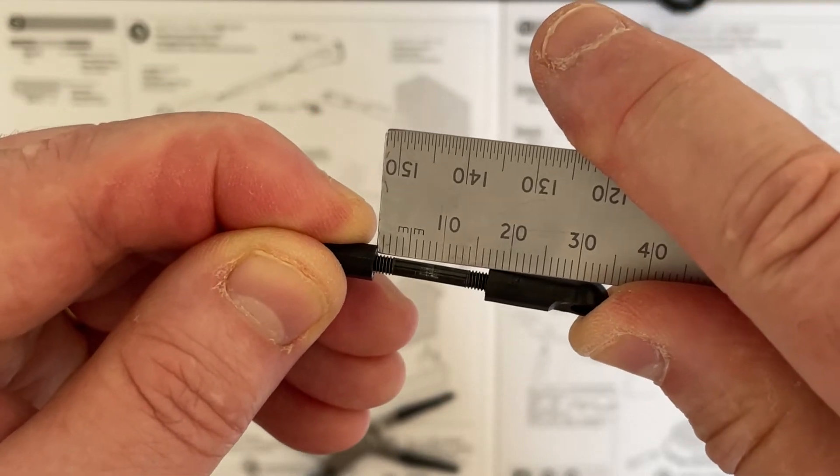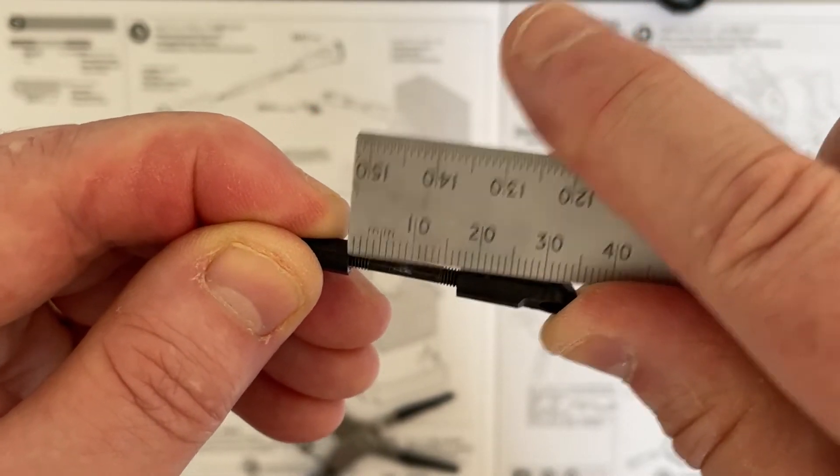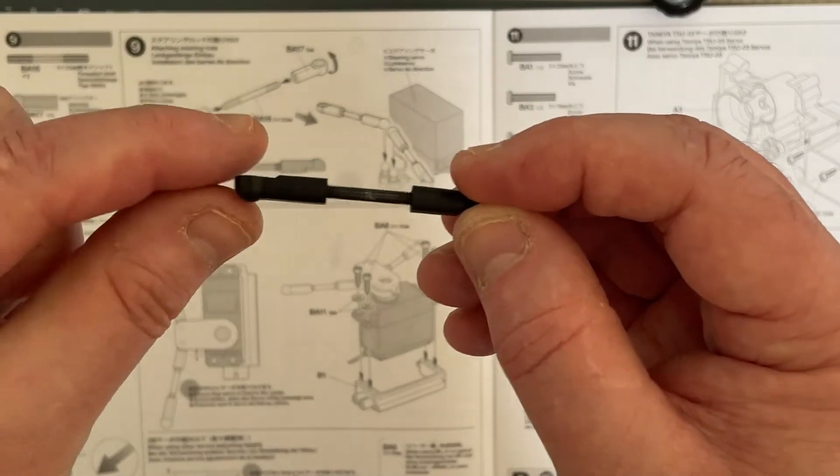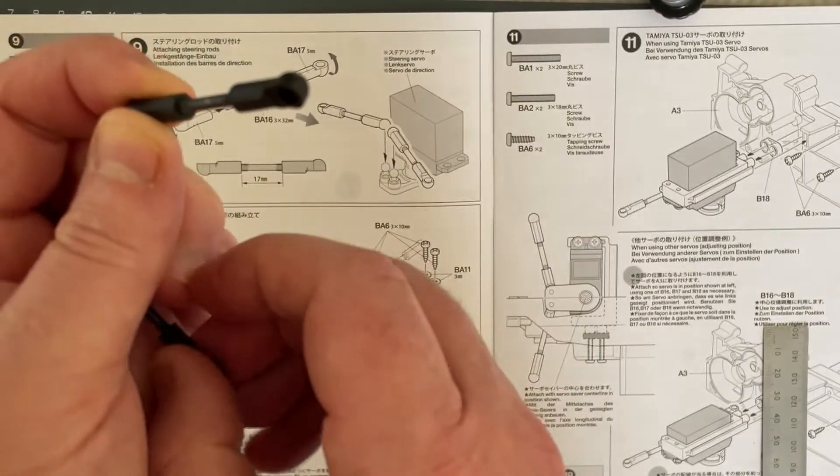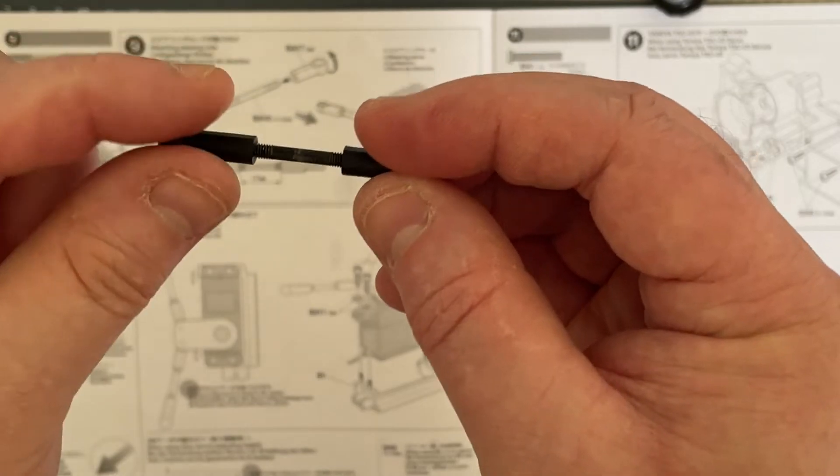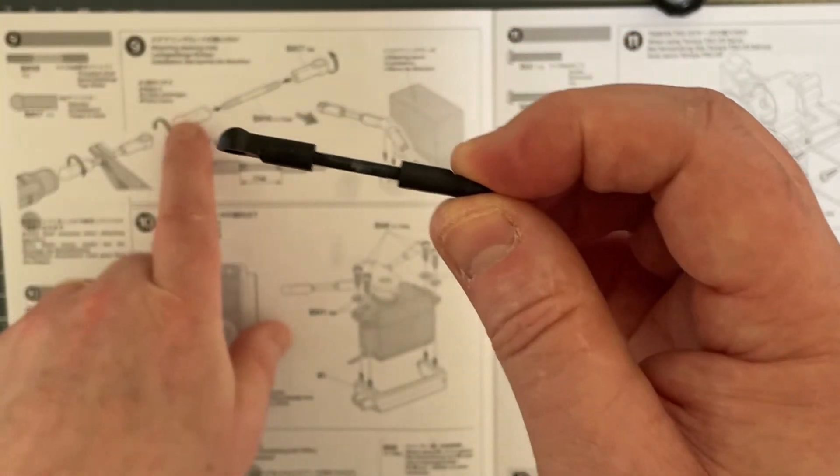So once you've done one of these, then you do the second one because you have to make two of these. I now have two completed with one cup up and one cup down and the 17-millimeter gap.